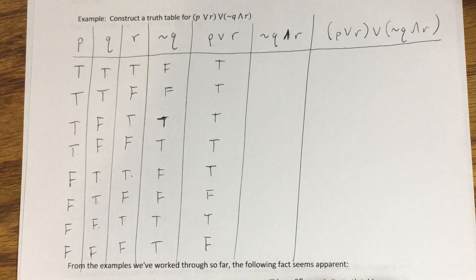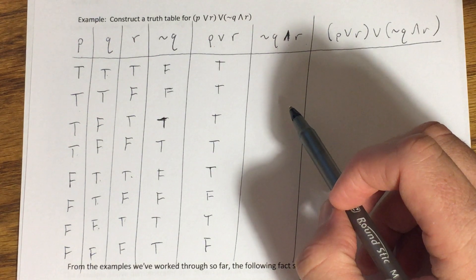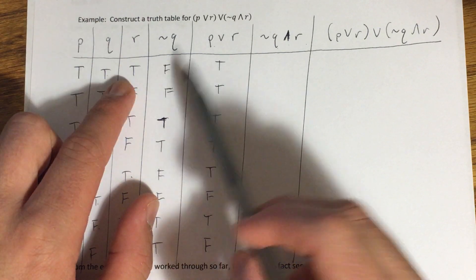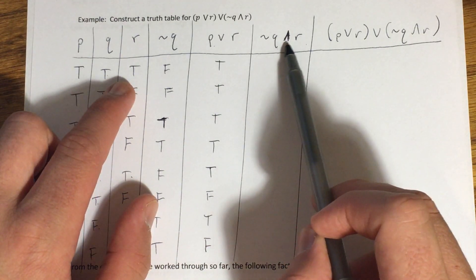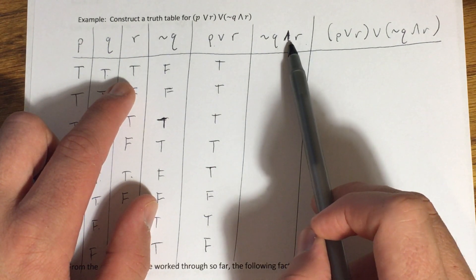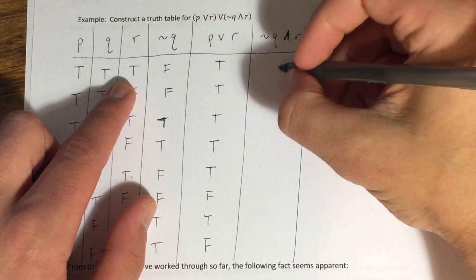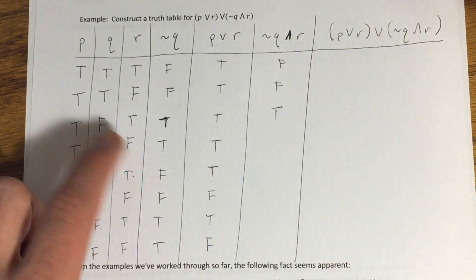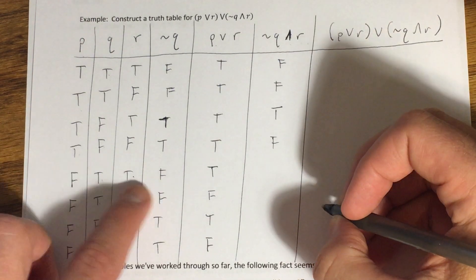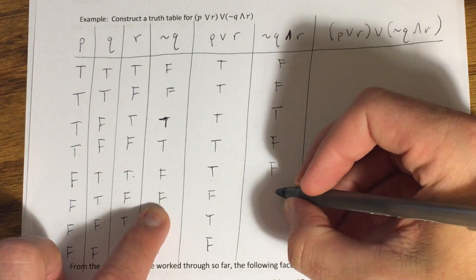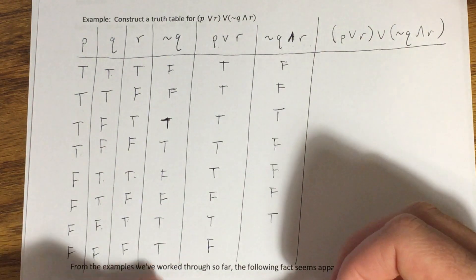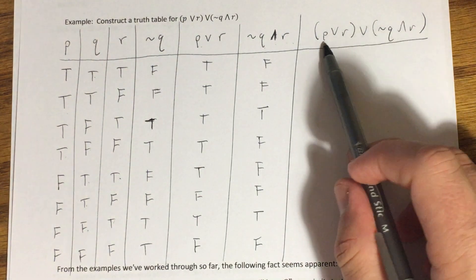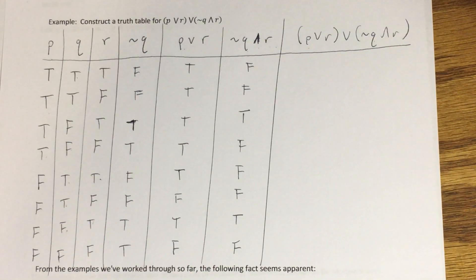For 'not q and r,' we compare the not-q column and the r column — it's a conjunction, so both need to be true. Going through each row: false — false; false and false — false; true and true — true; false — false; then false — false; false and false — false; true and true — true; false — false.